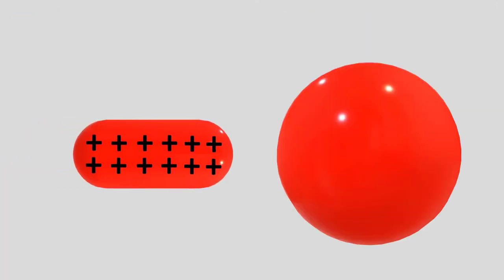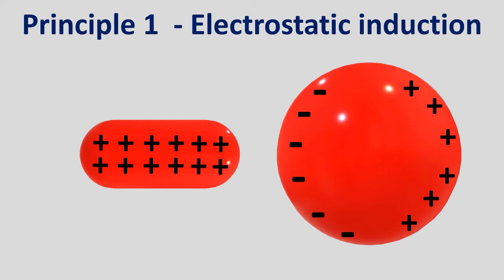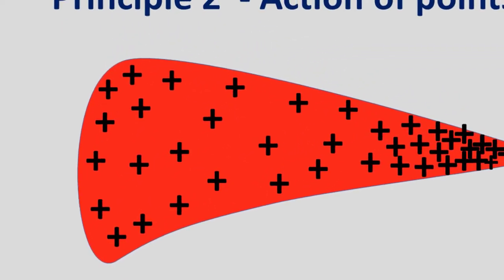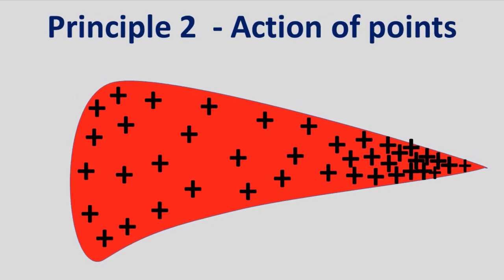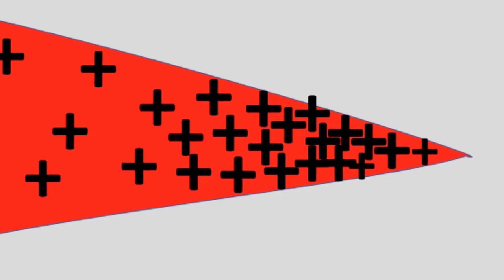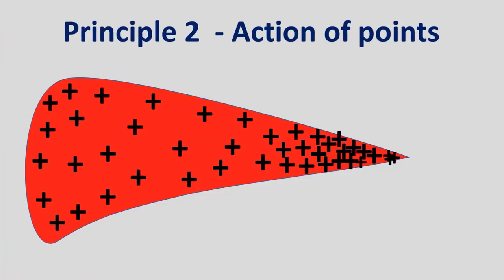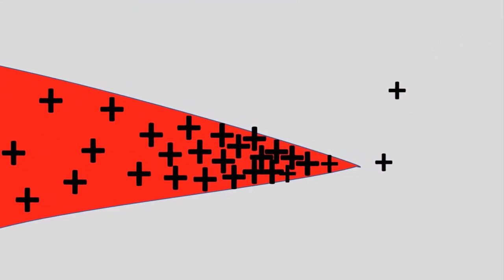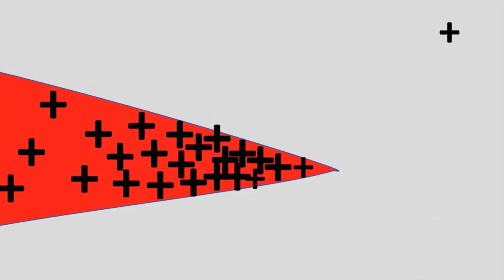Electrostatic induction is a process of generating static electricity in a material without touching it. The electric charges on the surface of a charged object do not necessarily spread out evenly. They accumulate more at the sharper areas than at flatter areas. The leakage of electric charges from the sharp points of the charged conductor is known as action of points.